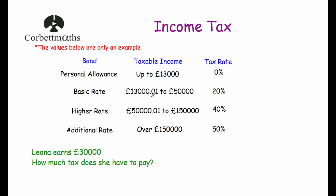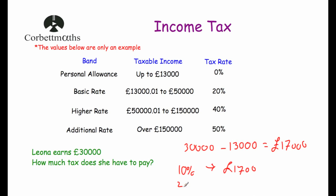To work out the taxable amount, we take £30,000 and subtract £13,000, which leaves £17,000 that Leona has to pay tax on at 20%. If this is a calculator question we could type £17,000 multiplied by 0.2, or we can say 10% is £1,700 so 20% is double that, which equals £3,400. So Leona has to pay £3,400 in income tax.